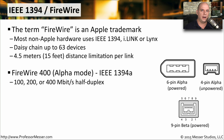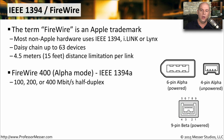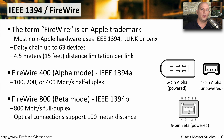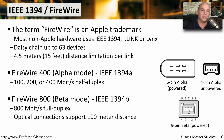There are generally two types of FireWire connectors. FireWire 400, also called Alpha Mode or IEEE 1394A, supports speeds of 100, 200, or 400 megabits per second in half-duplex mode. FireWire 800, also called Beta Mode or IEEE 1394B, doubles the maximum speed and allows 800 megabits per second in full-duplex mode.